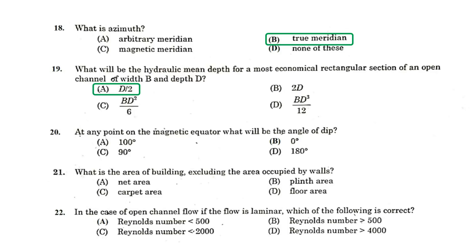At any point on the magnetic equator, what will be the angle of dip? 0 degree. What is the area of building excluding the area occupied by the walls? Floor area. In the case of open channel flow, if the flow is laminar, which of the following is correct? The Reynolds number will be less than 500.